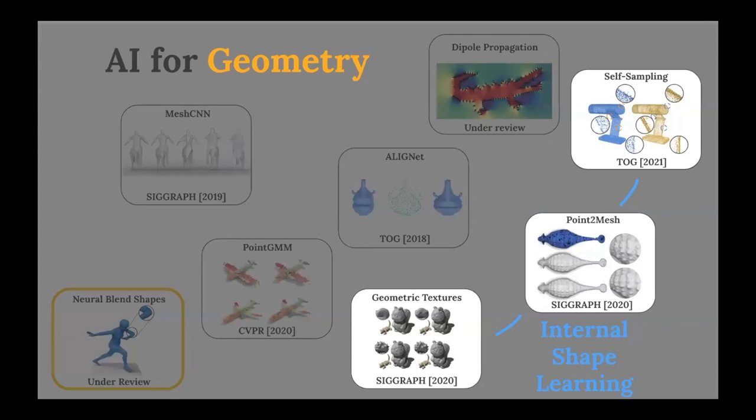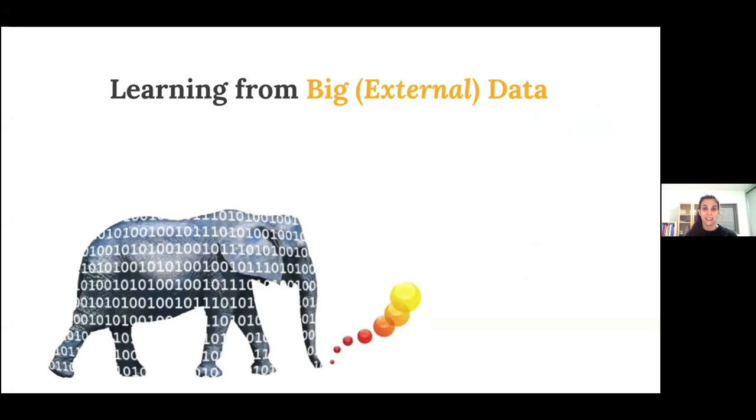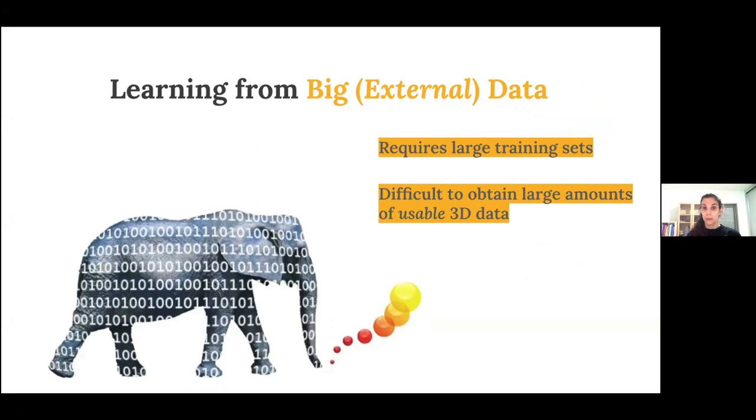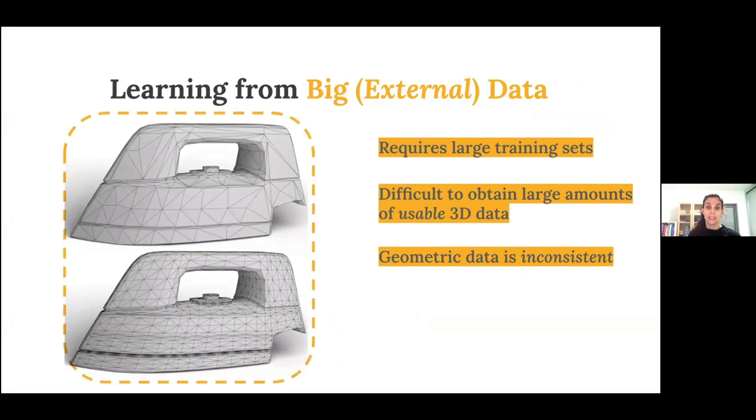Okay. So in this next section, I'm going to talk about three different works that pursue this idea of learning from the internal data within a single shape. The most popular use of deep neural networks involves training them on big data. This requires generating large external datasets, but this is especially challenging for 3D because as I mentioned before, it's hard to obtain large amounts of usable geometric data. And even if the geometric data is usable, it's still inherently inconsistent. For example, the same exact shape can be represented using many different underlying meshings. And this type of inconsistency will make learning ambiguous and challenging.